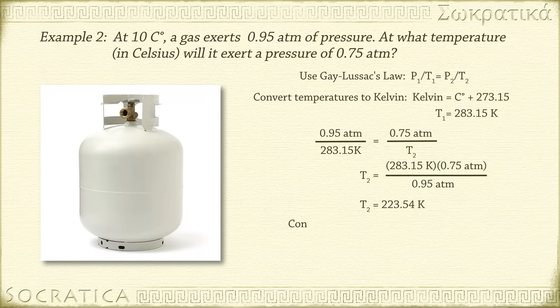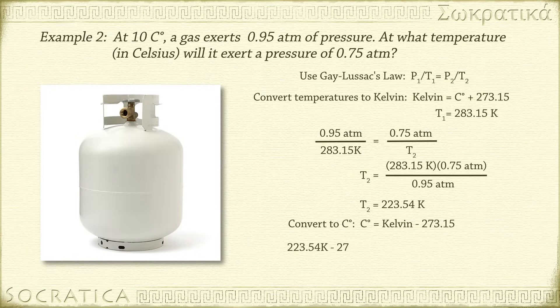We're not done yet. Remember, we have to convert our temperature back to Celsius: 223.54 Kelvin minus 273.15 equals negative 49.6 degrees Celsius.